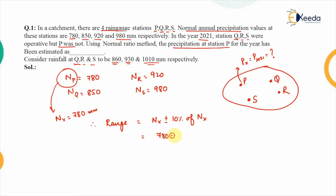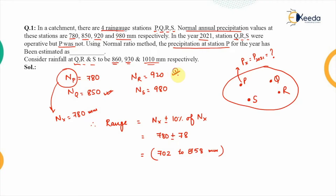The range to be decided is 780 ± 78, which gives a range of 702 to 858 millimeters. Checking the normal precipitation values: the Q value of 850 falls within that range, but the normal precipitation values at R (920) and S (980) do not fall within the range. Because of this, we will use the normal ratio method.